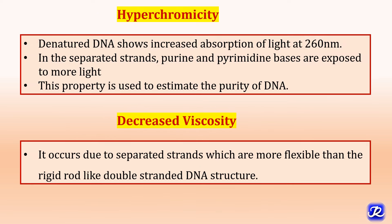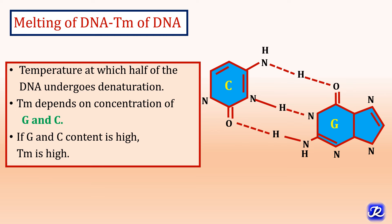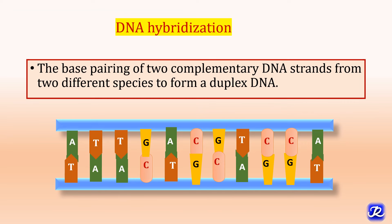The third property is hyperchromicity — denatured DNA shows increased absorption of light at 260 nm. In the separated strands, purine and pyrimidine bases are exposed to more light, and this property is used to estimate the purity of DNA. The next property is decreased viscosity, which occurs because separated strands are more flexible than the rigid rod-like double-stranded DNA structure. The melting temperature of DNA is the temperature at which half of the DNA undergoes denaturation. Melting temperature depends on guanine and cytosine content — if G-C content is high, the melting temperature is high, because three hydrogen bonds between guanine and cytosine require more heat to disrupt.